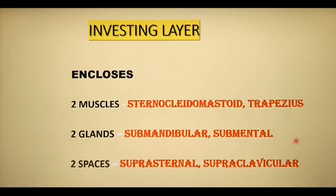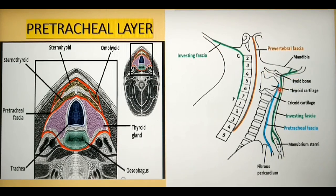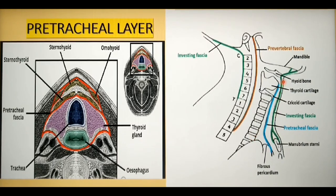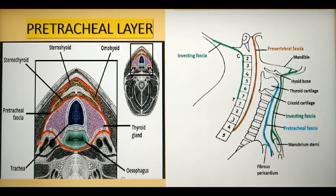The second layer, or the pretracheal layer of deep cervical fascia, is depicted in blue color in the sagittal view. It is situated in the anterior neck and extends between the hyoid bone and the oblique line of the thyroid cartilage superiorly and the thorax inferiorly, where it blends with the pericardium of the arch of the aorta. In the cross-sectional image, the pretracheal layer fuses with the carotid sheath deep to the sternocleidomastoid muscle.